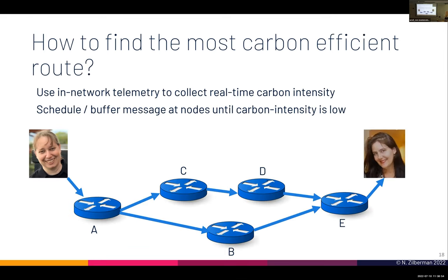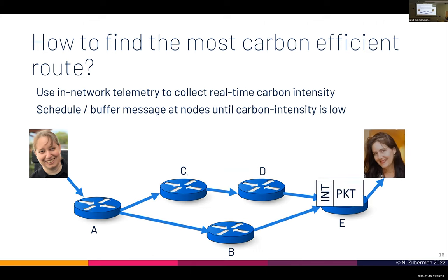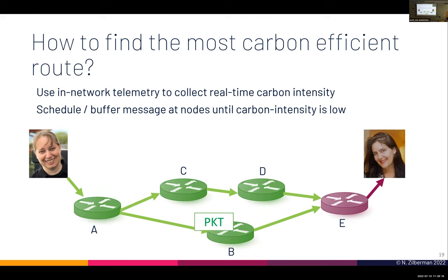So how do I find the most carbon efficient route using carbon intelligent routing? I'd like to schedule messages to nodes when carbon intensity is low. I use INT to collect information. When I want to route a packet, I send packets through nodes that are green — using renewable energy, with low carbon intensity. And if router E in this example is currently red and not carbon efficient, I delay the message until it becomes green and then send it to the destination.